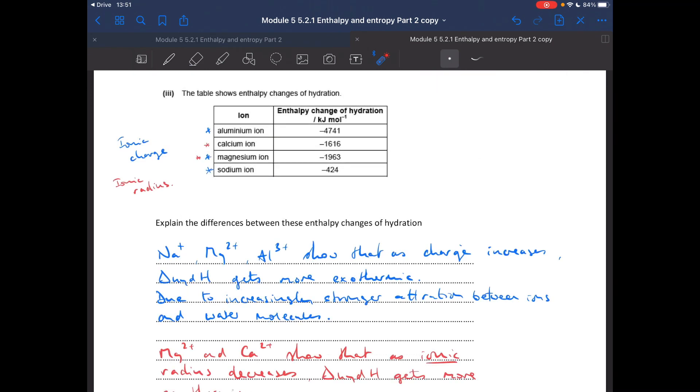We've now got to explain the differences between the enthalpy changes of hydration from the table. So I've starred the aluminium, the magnesium, and the sodium ions in blue, because we can use those to show the effect of ionic charge, because obviously that's 1+, 2+, 3+. And then the other factor that affects hydration enthalpy is the ionic, not atomic, the ionic radius. So you've got two 2+ ions in there, so we can compare their ionic radius with their enthalpy change of hydration.